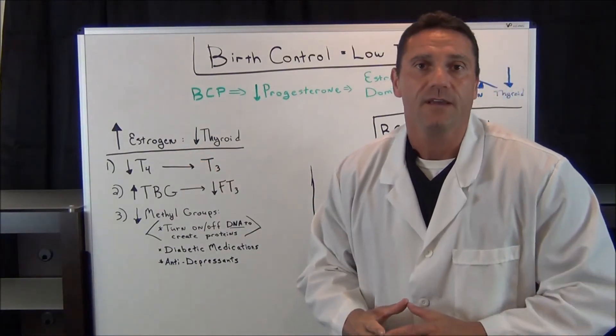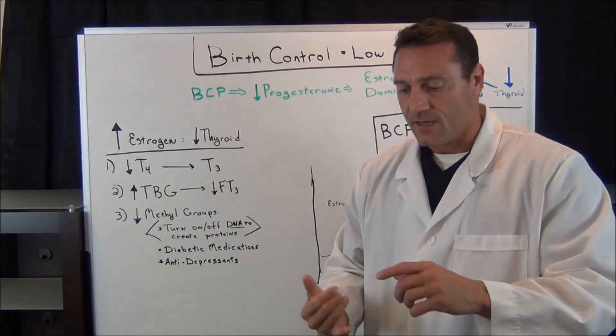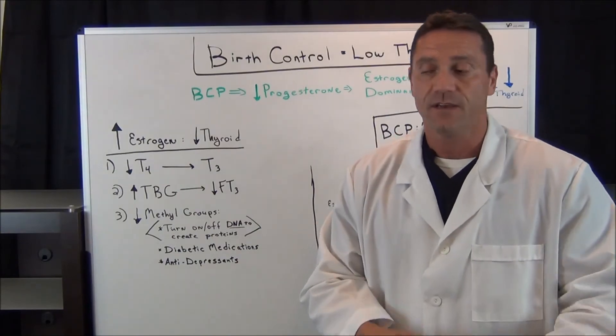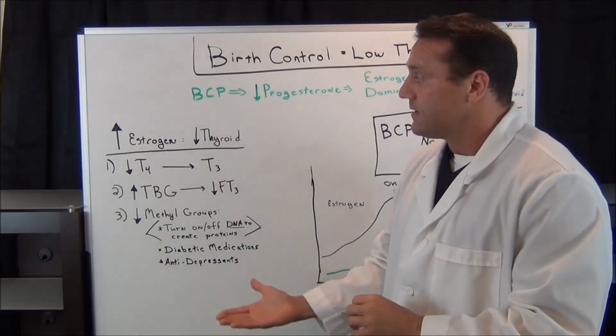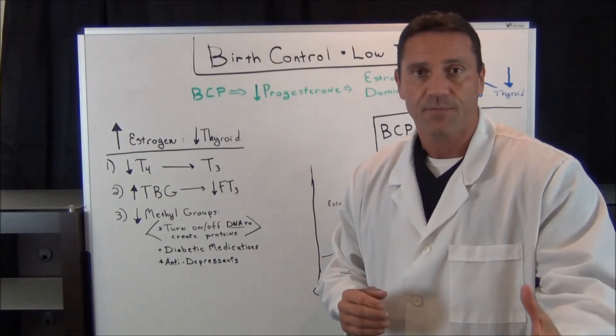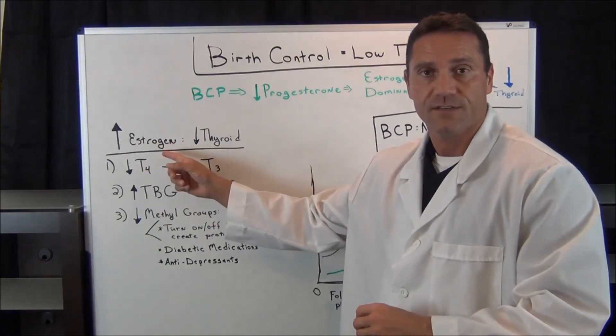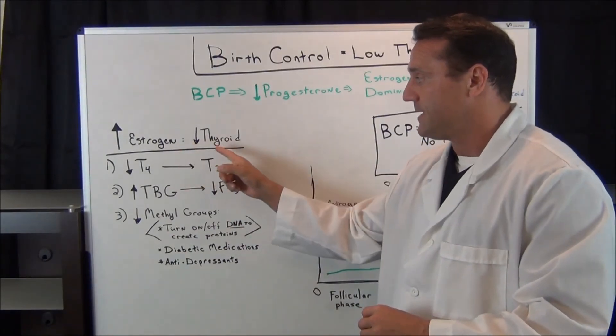Now, on a side note, cancers love estrogen. So this is where the increase of breast cancer, uterine cancer, ovarian cancer, also cysts, uterine fibroids, because what's happening is that a lot of females and also the foods, the GMO foods, the dairy products, they're giving a lot of estrogen to those animals.